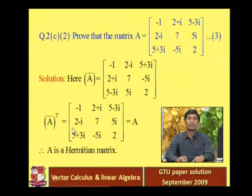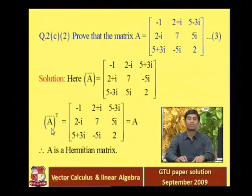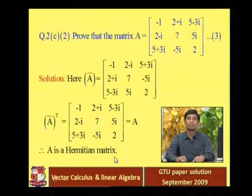A-star — the transpose of the conjugate — equals A. Therefore A is a Hermitian matrix, which is what we needed to prove.